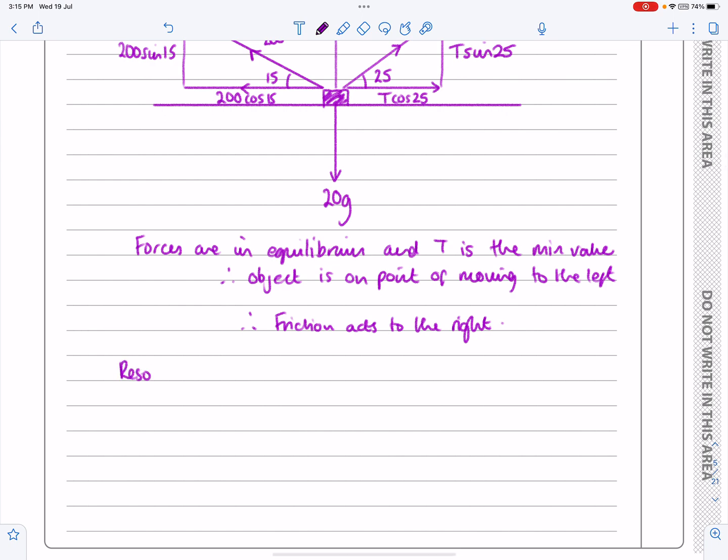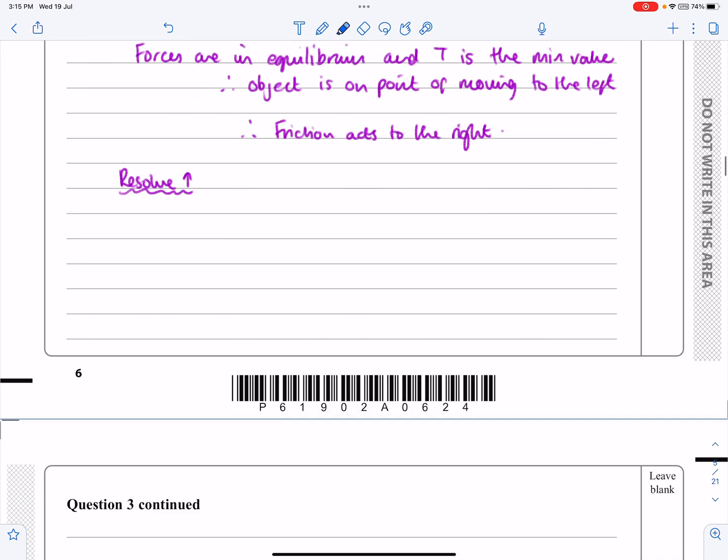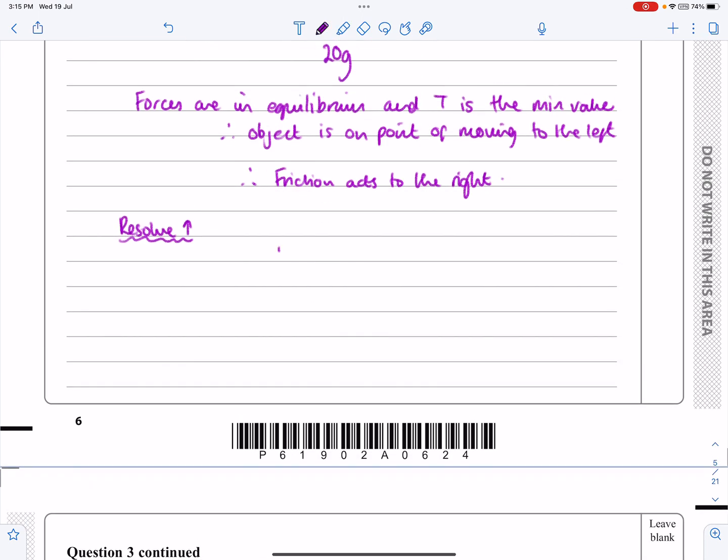We know it's an equilibrium in both ways. So if I resolve vertically, first of all, what have I got vertically? I've got those three are all going up and that one's going down. They're in equilibrium. So I can say F equals ma. I generally tend to say that each time, but we know that acceleration is equal to zero.